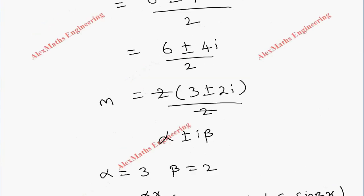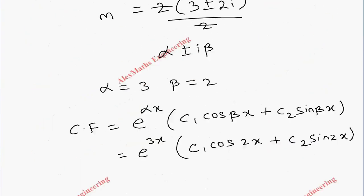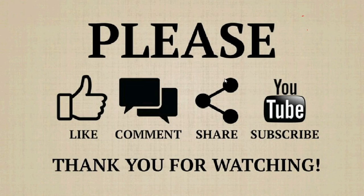We have no particular integral because the other side is 0. Therefore, the solution is y = CF + PI, so now the solution is only the complementary function: e^(3x)(c₁cos(2x) + c₂sin(2x)).